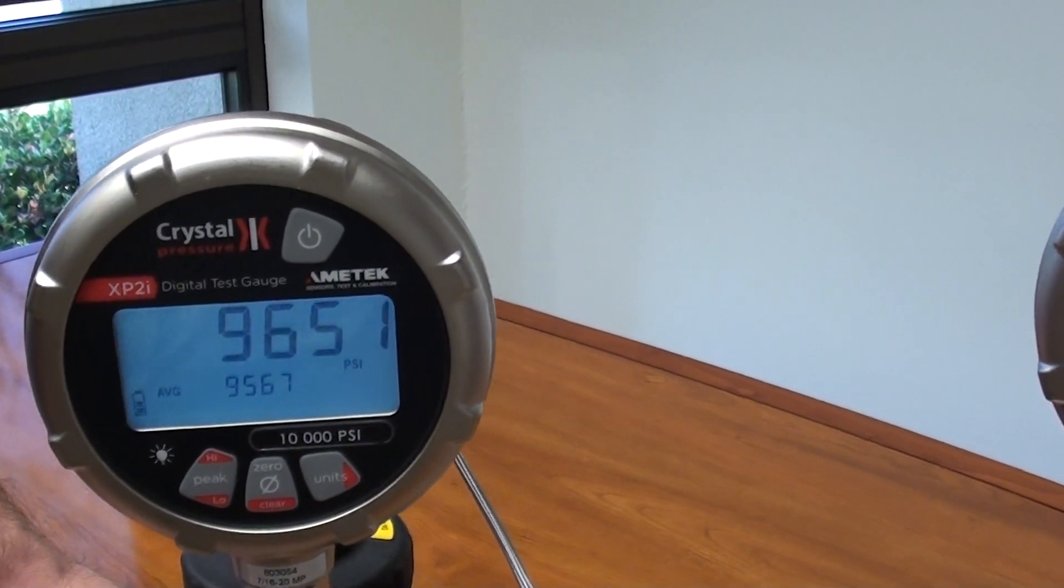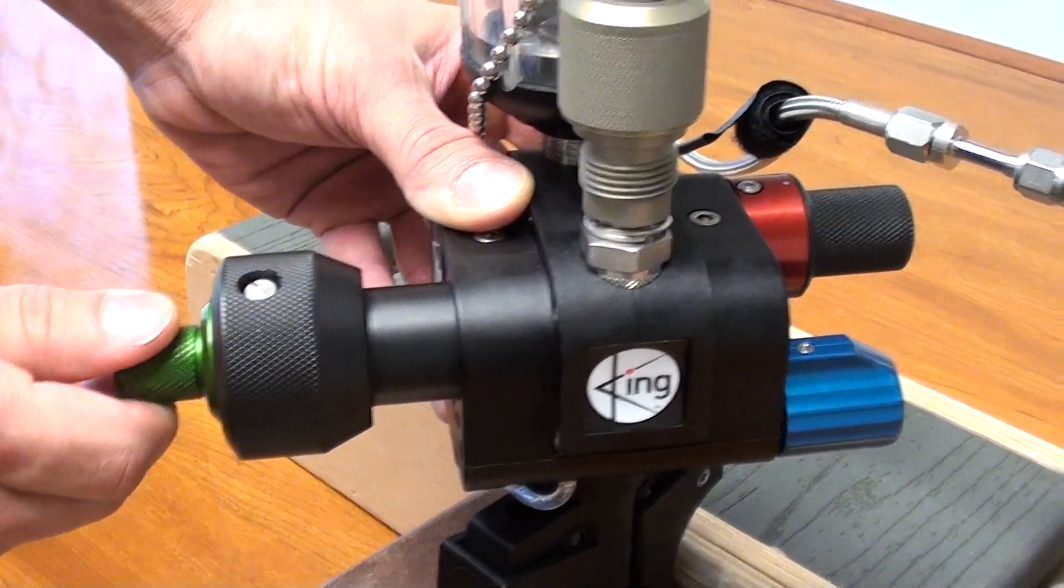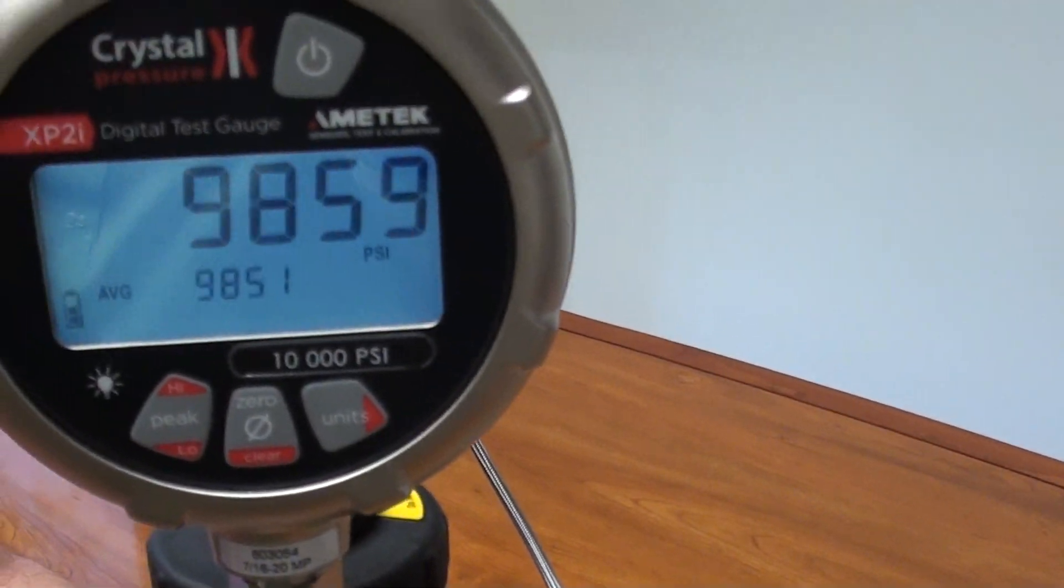Okay, so once there, now we're going to use the fine adjustment knob, the green knob, to take us all the way to 10,000 PSI.